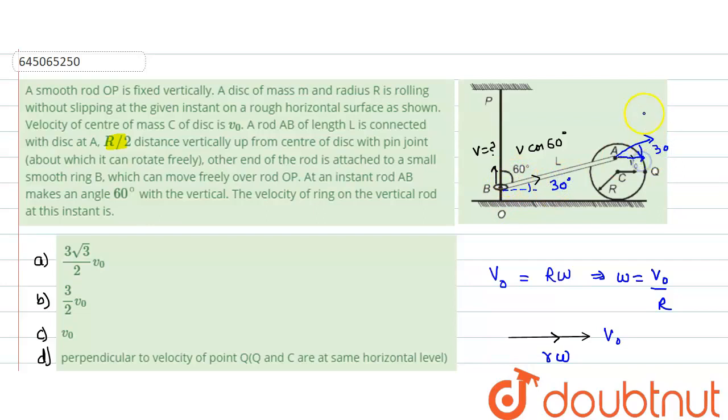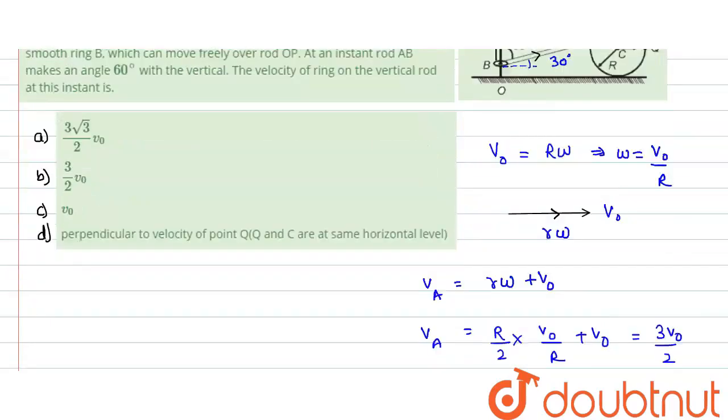So velocity of A along this direction equals vₐ cos 30°. Now vₐ cos 30° in this direction and v cos 60° in this direction should be same, because each and every point along the length of the rod would have the same velocity because it is a rigid rod.